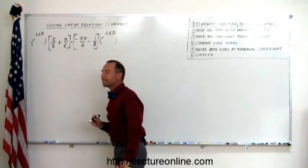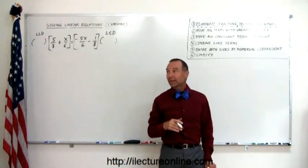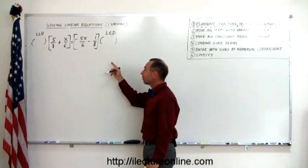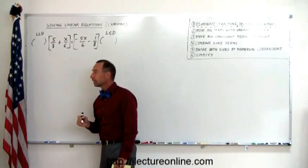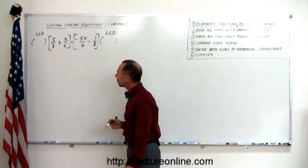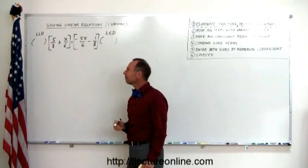What is an LCD? Well, an LCD is the denominator that all denominators fit evenly into it. Well, there's all kinds of ways in which you can find the lowest common denominator, and that's a lecture in itself.